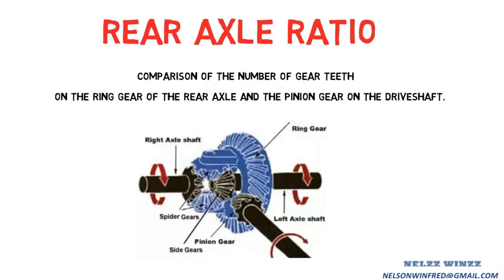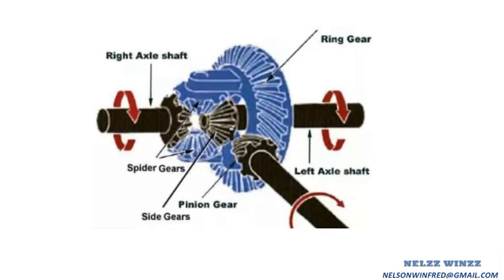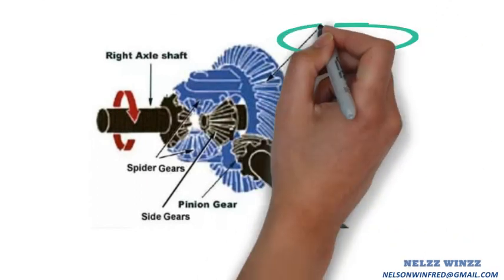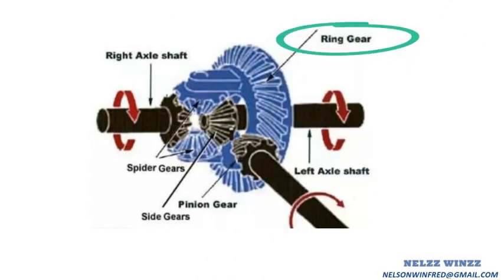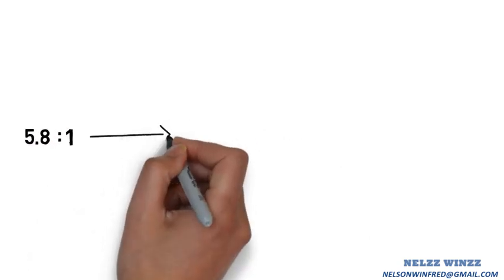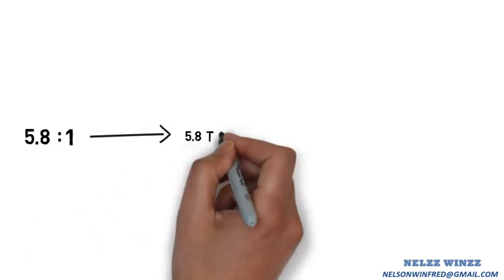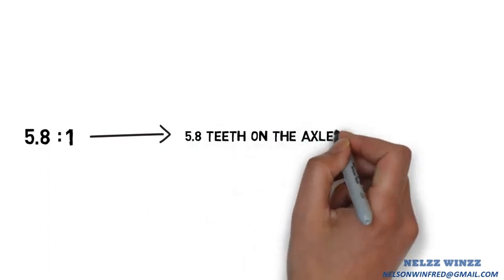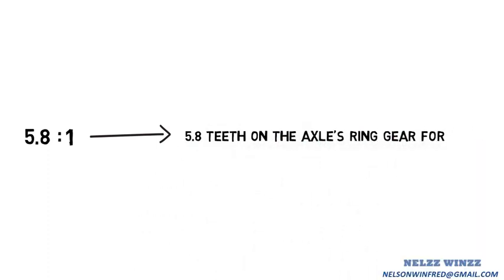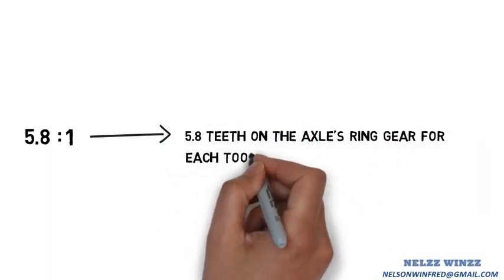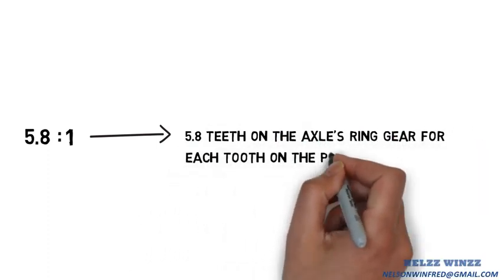In this picture you can see the ring gear and pinion arrangements. For example, a 5.8:1 rear axle ratio means 5.8 teeth on the axle's ring gear for each tooth on the pinion gear on the drive shaft.